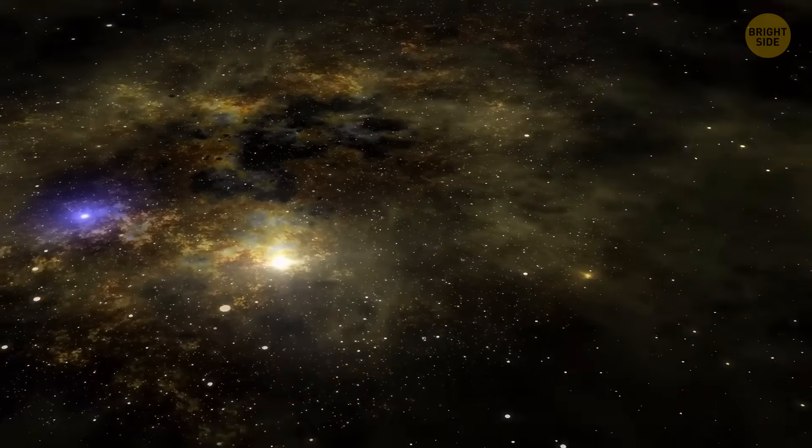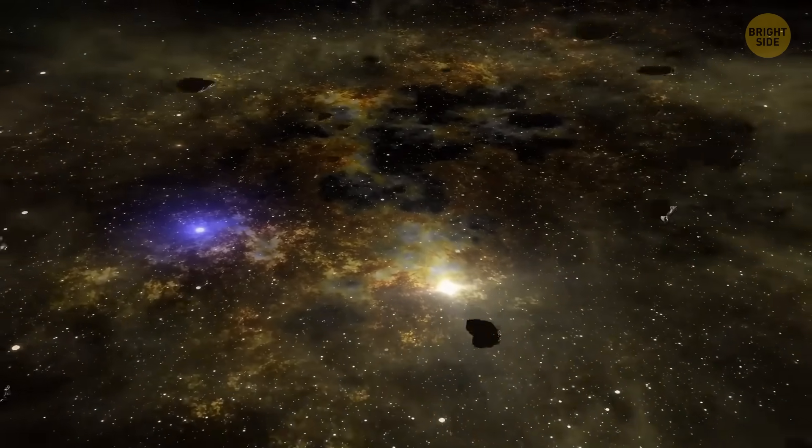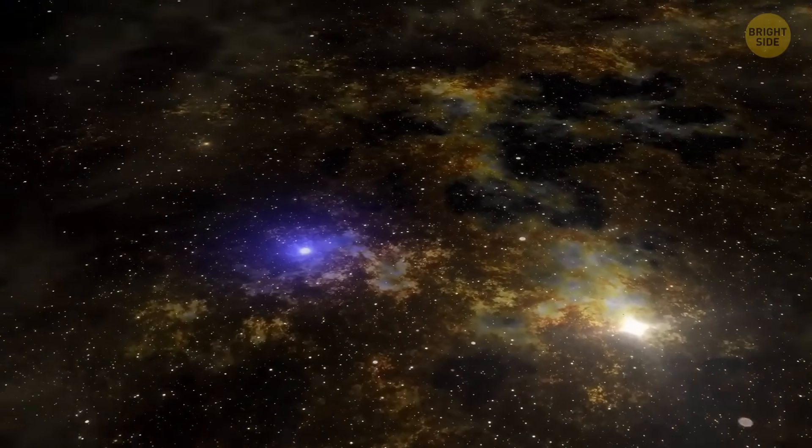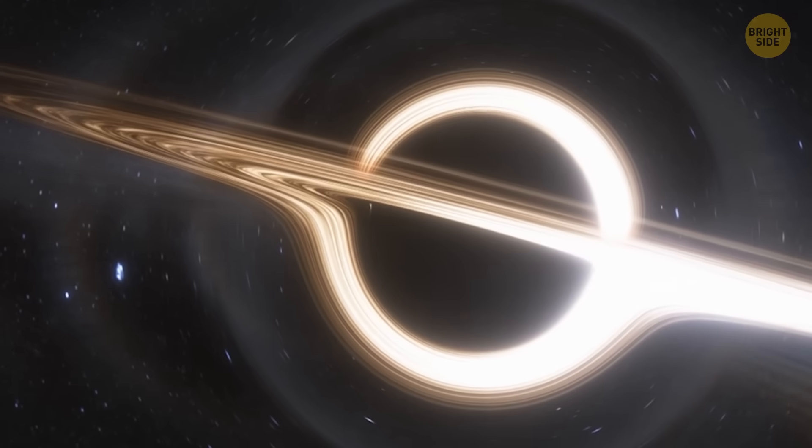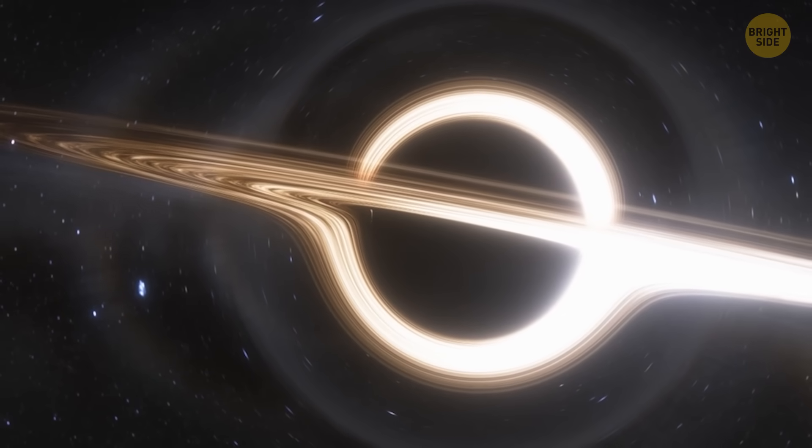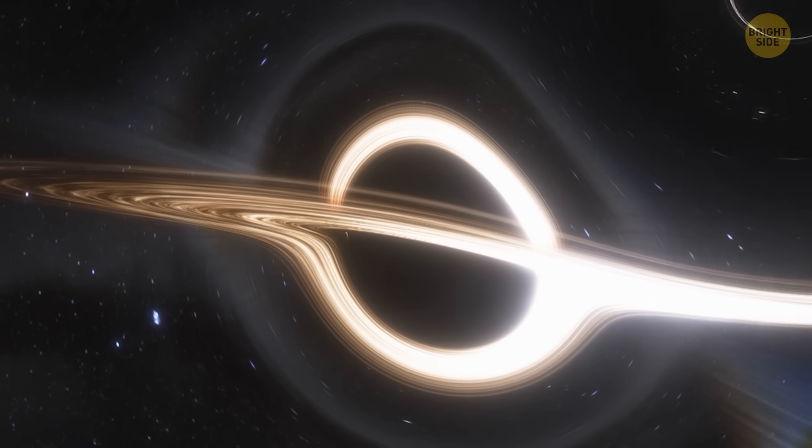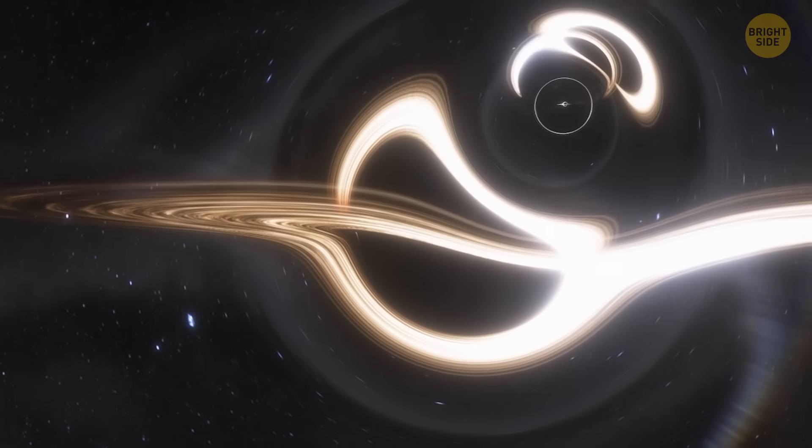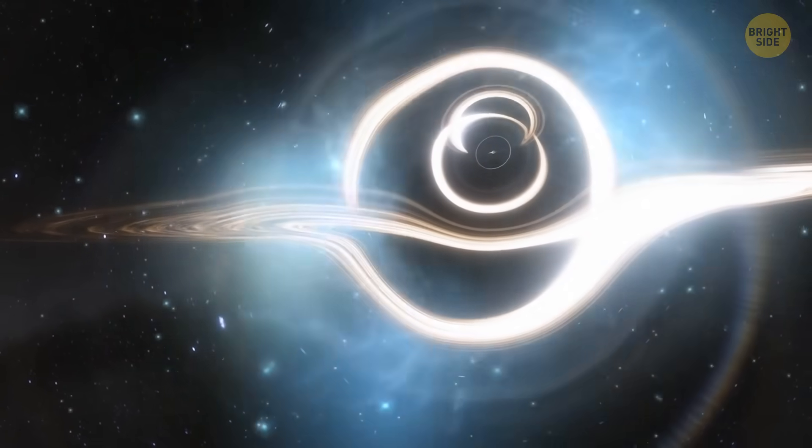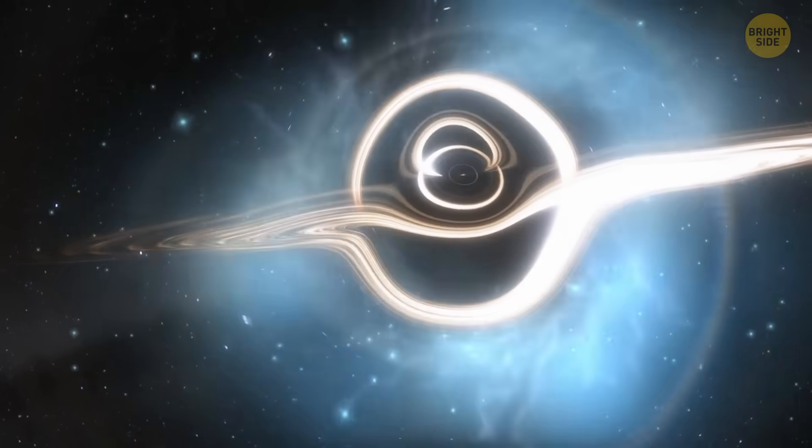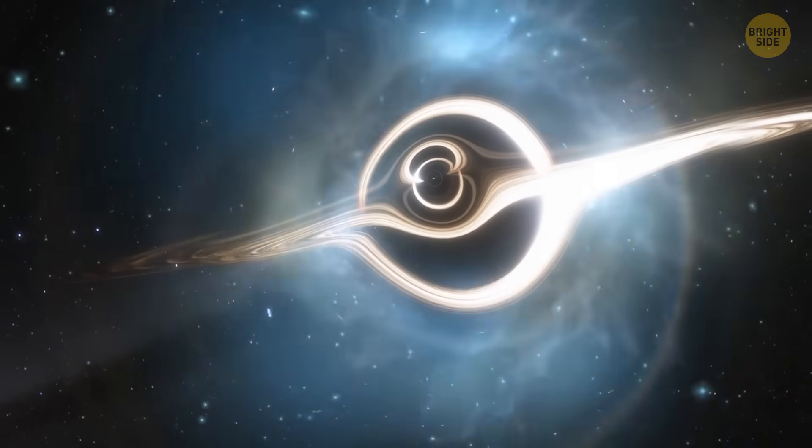There are also places in the universe where time and space are distorted in ways that challenge our human comprehension, like binary black hole systems, where two massive black holes dance around each other before eventually merging. As they spiral closer, they release immense gravitational waves that ripple across space-time.